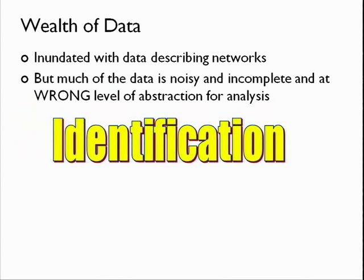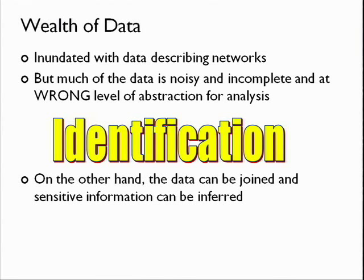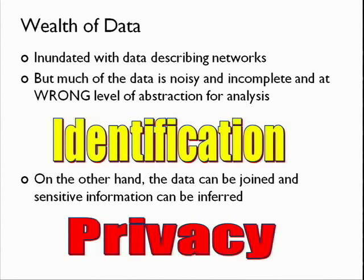What I'm going to describe in the first part of the talk is the problem I call identification — how do you take incredibly noisy, incomplete information describing a network and consolidate and abstract it in the right way to do something useful? But then there's the flip side: all this noisy data out there can be joined together, and you can get a lot of things that maybe you didn't want people to get. So there's a privacy element too.